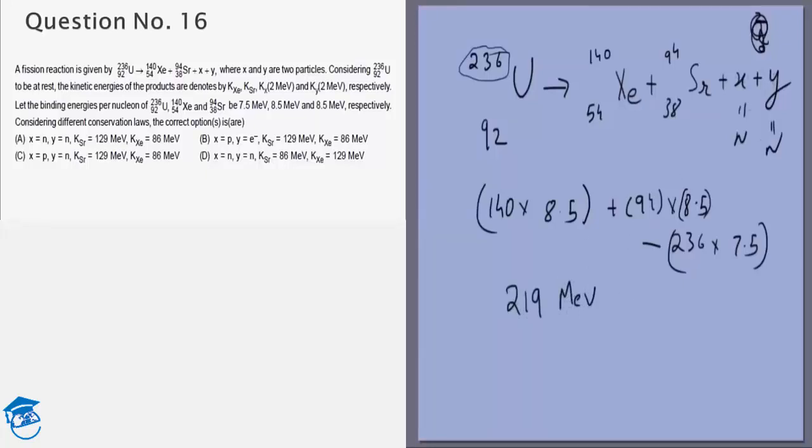And we are given that the kinetic energy of X and Y are 2 mega electron volts each. That means these two have a combined kinetic energy of 2.5 mega electron volts.